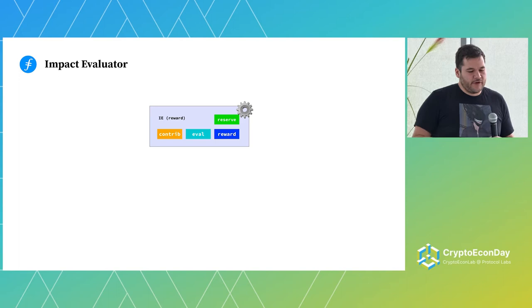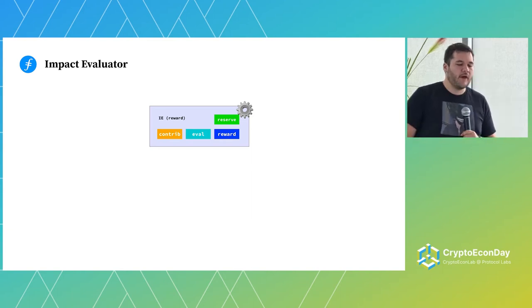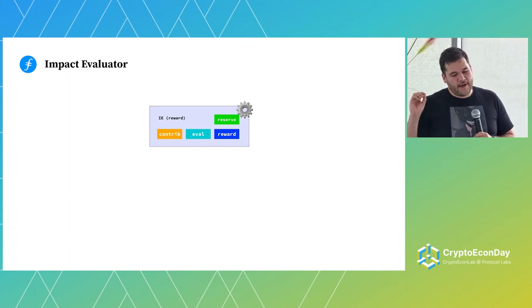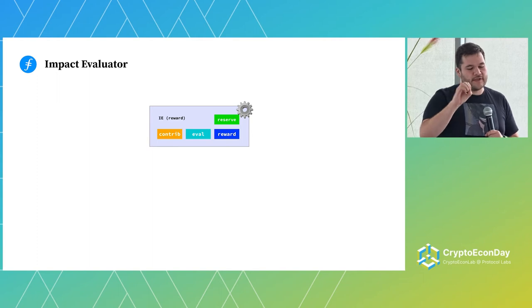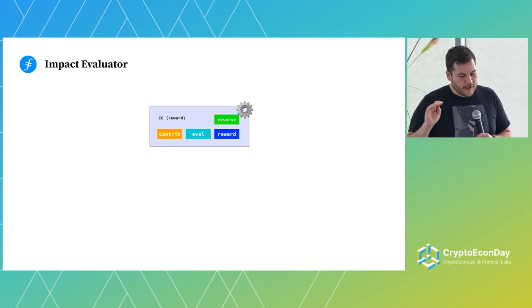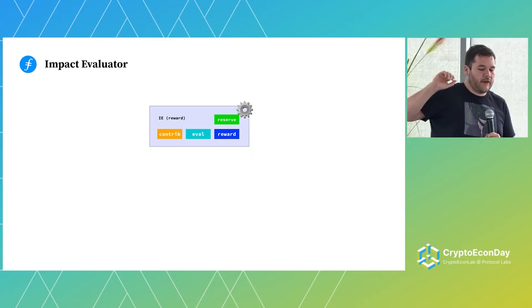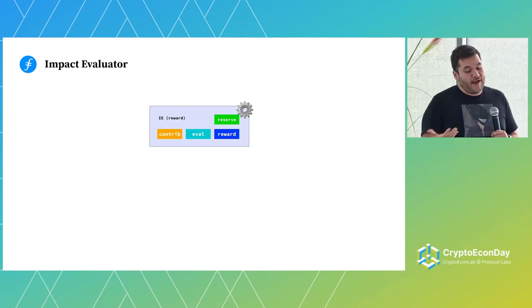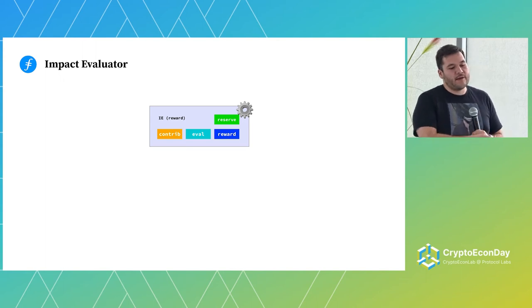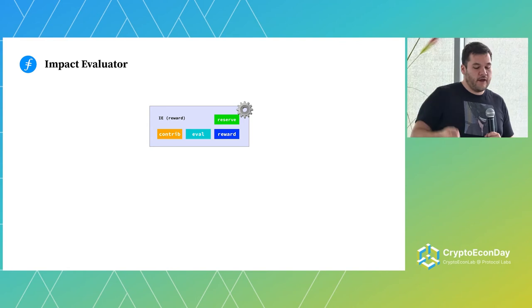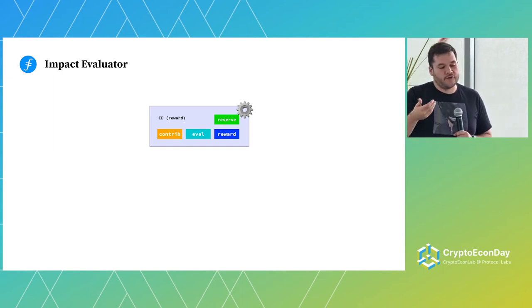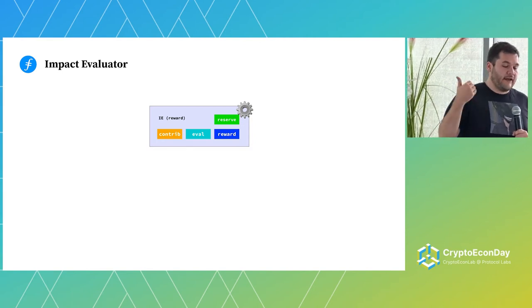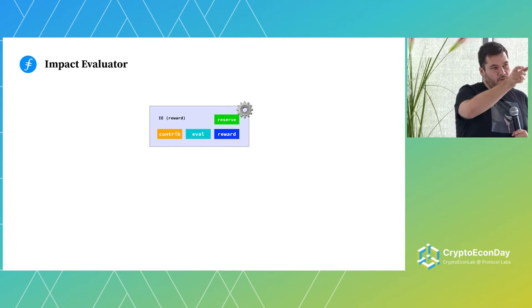Impact evaluators are not well understood — they haven't really been studied as mechanisms themselves. There are echoes to control theory and other systems, but I've been trying to work on figuring out the components and the different levers you have to tune the impact evaluator. The traditional version is like the Bitcoin block reward or the Web3 crypto block reward model: you have some reserve of currency, a certain amount of contributions, some way of evaluating those contributions, and some way of rewarding them. In the classic Bitcoin example, the reserve is the Bitcoin yet to be minted following some exponential decay — a way of mapping the reserve to a unit of time.